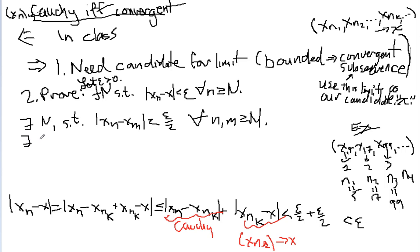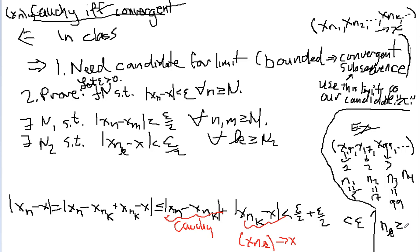There also exists, how should I say this? I should say an N sub 2 such that x sub n sub little k minus x is less than epsilon over 2 for all little k bigger than or equal to N over 2. And notice over here in my little example, in all of these cases, here k is 1, n sub k is 5. Here k is 2, n sub k is this. So we always know that n sub k is going to be bigger than or equal to k.